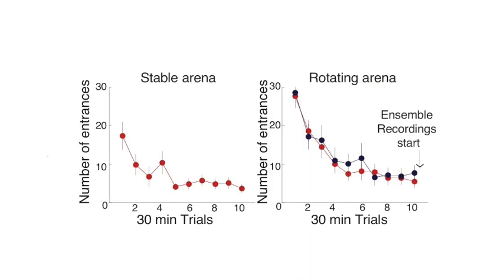We recorded from head direction cells in the medial entorhinal cortex while rats solved two versions of the task. In one version, the arena was stable. In the other, it was rotating.